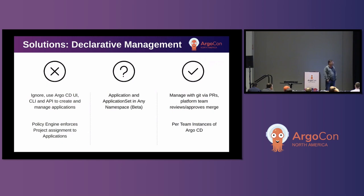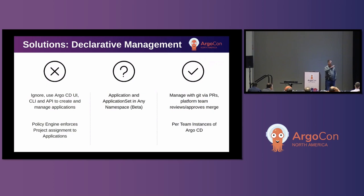There's a model I affectionately call the Intuit model — shoutout to Michael Crenshaw, one of the great Argo CD maintainers. Essentially, if you have application teams you want to give different instances to, you can give each instance access only to the clusters that team needs specifically. They get a single pane of glass for their applications while remaining isolated to a particular instance.